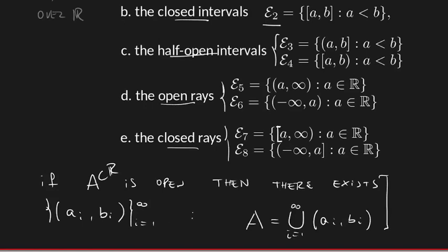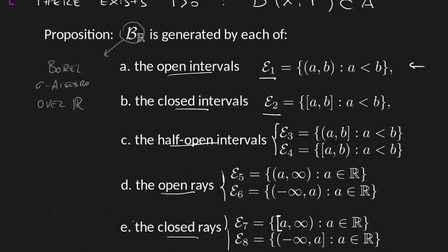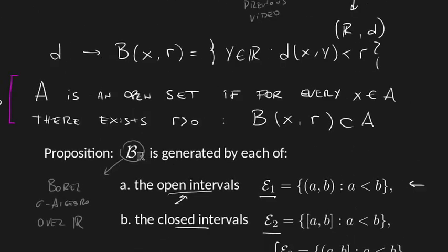So as we can write any open set as a union of intervals, then you can see why this Borel sigma algebra can actually also be generated by open intervals. Because for every open set, I can just write that open set as a union of open intervals, and then that union would be generating my sigma algebra.